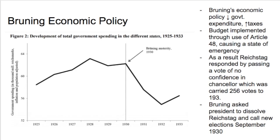Brüning, as the new Chancellor, brought in a new economic policy centred around austerity — decreasing government expenditure and increasing taxes. The budget was passed through Article 48, and as a result the Reichstag responded by passing a vote of no confidence in the Chancellor, carried by 256 votes to 193. So he's not popular. Brüning asked the president to dissolve the Reichstag and call for new elections in September 1930.